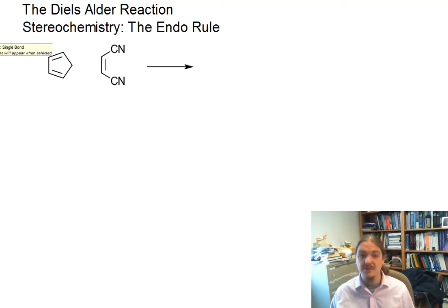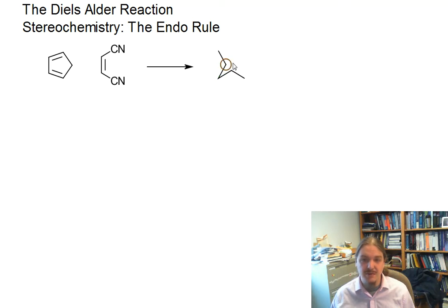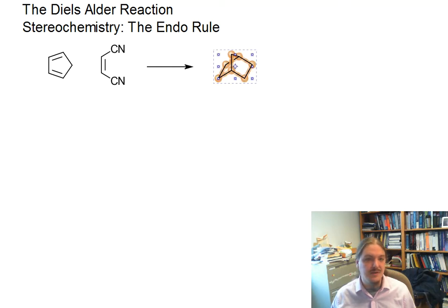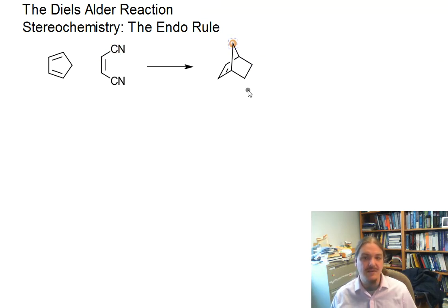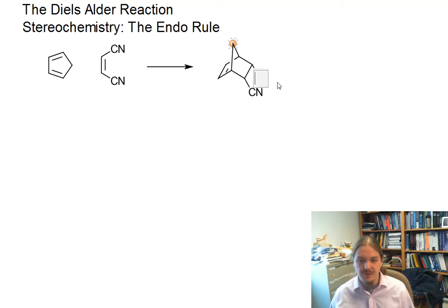From a stereochemical standpoint, this reaction follows a certain stereochemical pathway because the transition state demands it. This carbon atom here has to become this carbon atom over here, and because we have a cis dienophile, we have to have a cis product. That cis product can actually happen as one of two diastereomers.